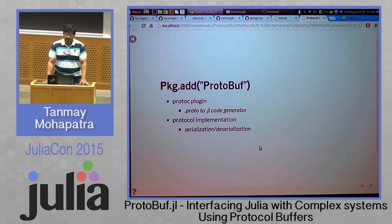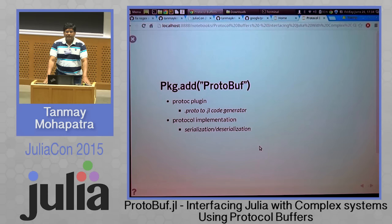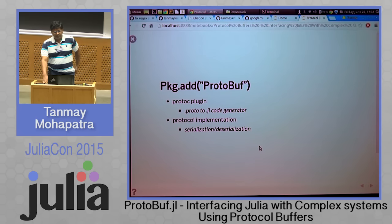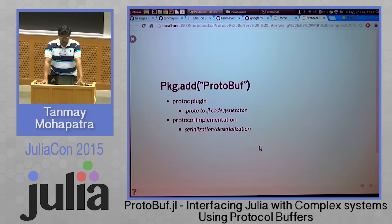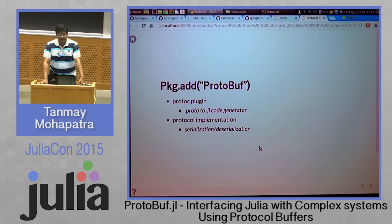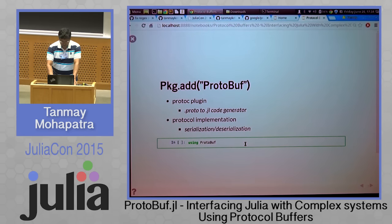In Julia, there is a package protobuf.jl. You can use the package manager to start using it, and it will provide a protobuf.jl plugin. Protobuf.jl is the protobuf compiler which converts the IDL to Julia code, providing a plugin for Julia code generation. It also has serialization and deserialization implemented. To start using it, you just have to say 'using protobuf' as usual.